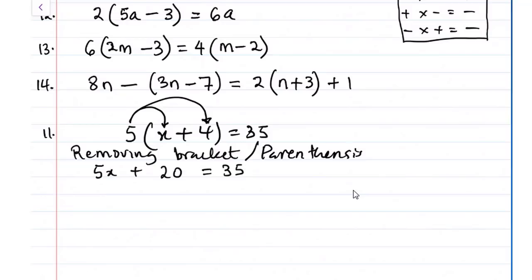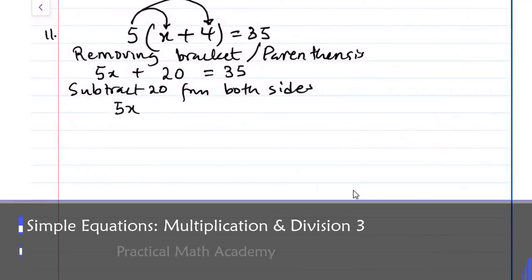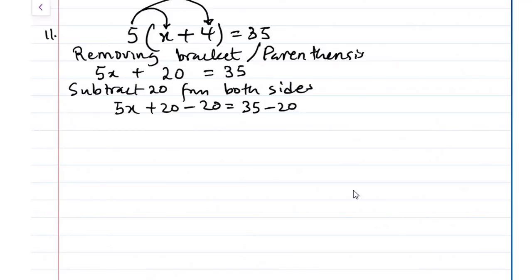The moment you remove the bracket, now you can now work out the value of the variable. So in this case, we have plus 20 on the left hand side. What can we say? We can subtract 20 from both sides. So when we subtract 20 from both sides, it will give us 5x plus 20 minus 20 and 35 minus 20. So that will give us 5x equals to 15.